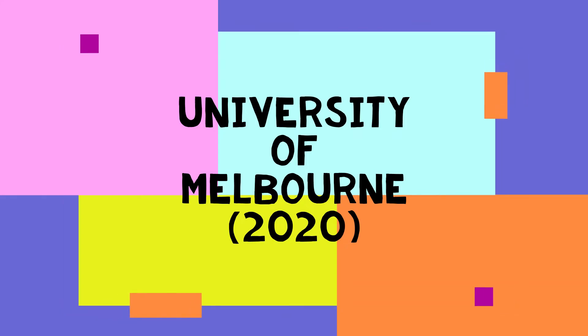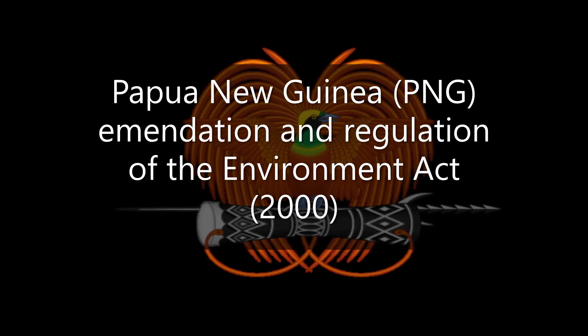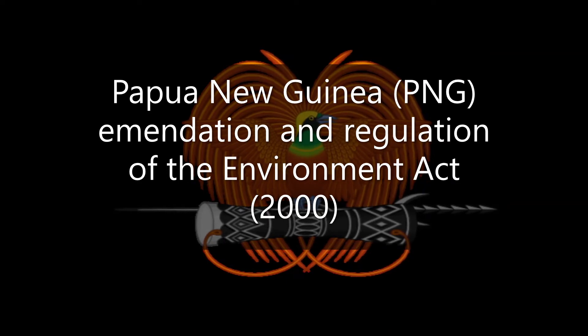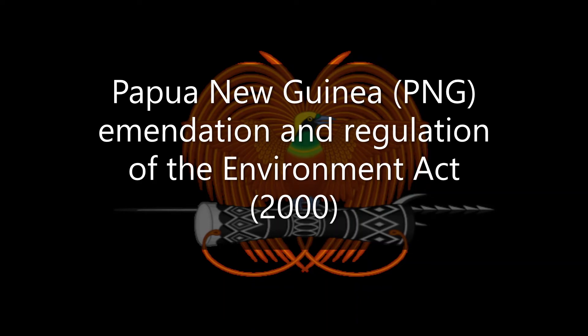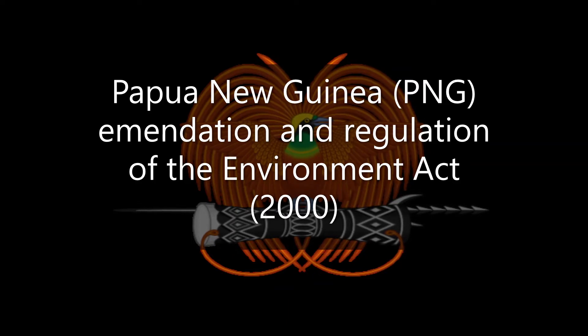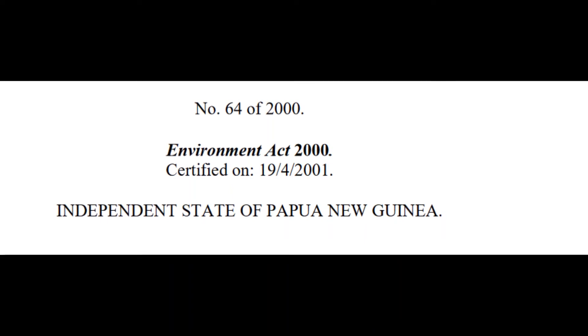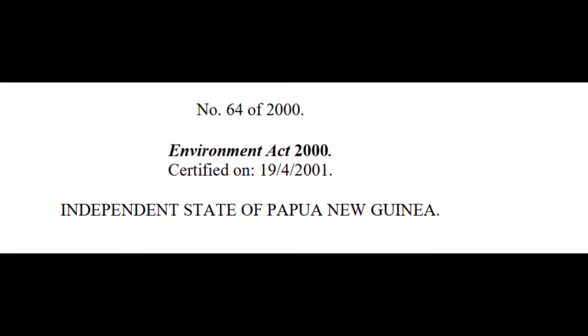To furthermore clarify, according to the University of Melbourne 2020, in Papua New Guinea, the amendment and regulation of the Environmental Act 2000 form the principal legislative structure for environmental protection, including the protection of social and physical well-being of people, providing constitutional requirements and regulating the environmental impacts of development activities and the management of water resources. The Act is an omnibus statute that incorporates environmental protection, environmental impact assessment, pollution control, and waste management, as well as acknowledging the role of customary law and land ownership.